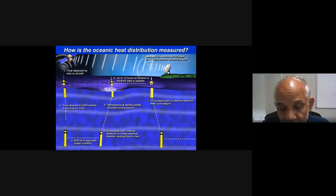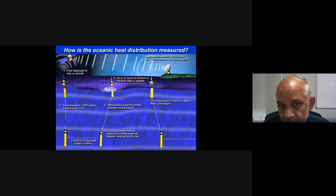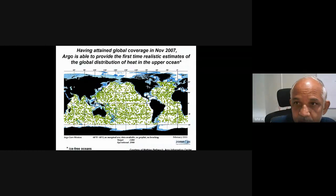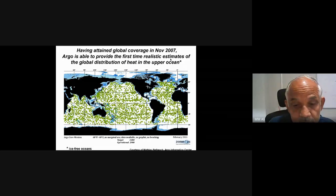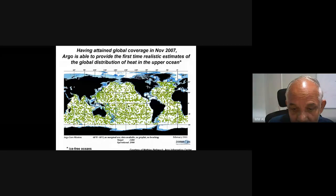Another concept from Argo floats: you can also estimate rainfall. When rain falls on the surface it creates noise, which is recorded by the Argo float. From that sound, we can roughly estimate the intensity of rainfall. This is another advantage of the Argo float. By 2007, Argo was able to provide the first time realistic estimates of the global distribution of heat in the upper ocean, and now those observations continue.